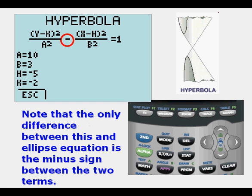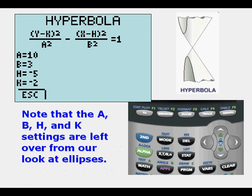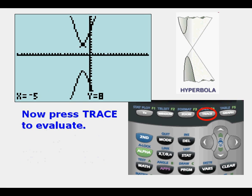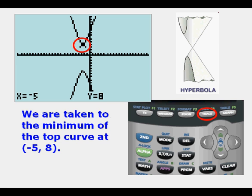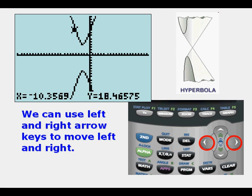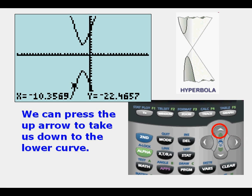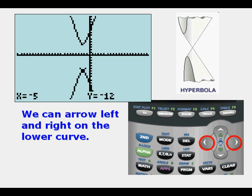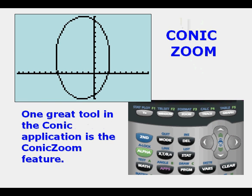Note that the only difference between this and the ellipse equation is the minus sign between the two terms. Note that the A, B, H, and K settings are left over from our look at ellipses. We press Graph to look at it. Now press Trace to evaluate. It takes us immediately to the minimum of that top curve. We can use left and right arrow keys to move left and right on that top curve. We can press the up arrow to take us down to the lower curve. Here we've done it. We can move the arrow left and right on the lower curve.